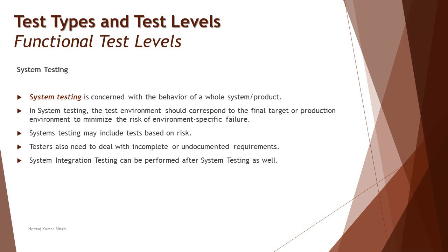Once we continue building this flow, we land at the final application — our system. System testing is about testing the system as a whole, making sure this is the final product the customer requested. Sometimes you're building only a part of the product — a system — which you hand over to a customer who collects similar systems from many other organizations and integrates them further. This is where system integration testing can happen after system testing.